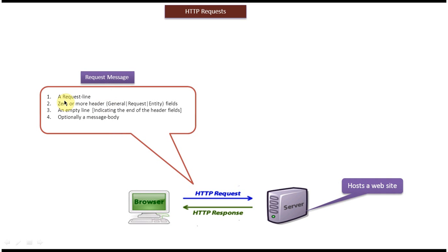Now we will see how the HTTP request message will look like. This request message has four parts. The first one is the request line, and the second part is zero or more header fields. There are three types of headers: the first one is general header, the second one is request header, and the third one is entity header.